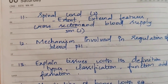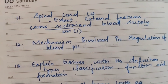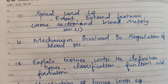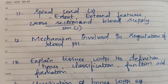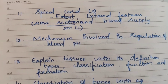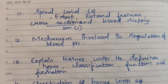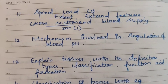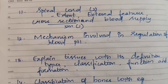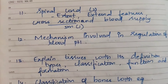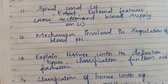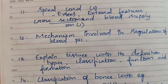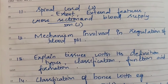The 11th topic: Spinal Cord, 15 marks, 2 times. Specified topics include headings, external features, cross section, and blood supply for 5 marks. Cross section of the spinal cord is also a key 5-mark subtopic.